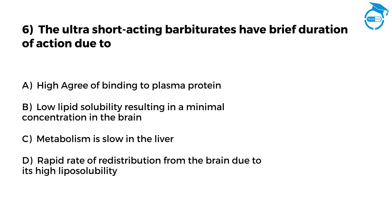The ultra-short-acting barbiturates have brief duration of action due to. Option A, High Degree of Binding to Plasma Protein. Option B, Low Lipid Solubility resulting in a minimal concentration in the brain. Option C, Metabolism is Slow in the Liver. Option D, Rapid Rate of Redistribution from the Brain Due to its High Liposolubility. Your time starts now.